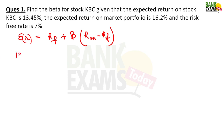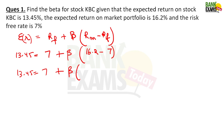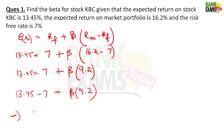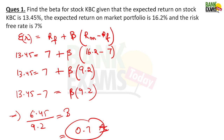Find the beta for stock ABC: expected return on stock ABC is 13.45%, expected return on the portfolio (market) is 16.2%, and risk-free return is 7%. Using ER = RF + Beta × (RM − RF): 13.45 = 7 + Beta × (16.2 − 7), so 13.45 = 7 + Beta × 9.2. Therefore, Beta = (13.45 − 7) / 9.2 = 6.45 / 9.2 ≈ 0.7. Very easy question.